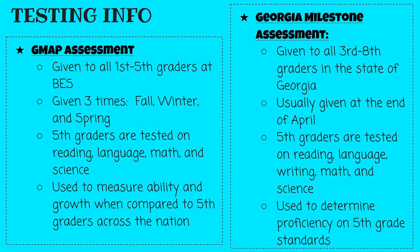Some important testing info for fifth grade: we give two major tests in fifth grade, the GMAP assessment and the Georgia Milestone assessment. The GMAP assessment is given to all first through fifth graders at Blackshear Elementary. It is given three times — once in the fall, then again in the winter, and then at the end of the year in the spring. Fifth graders are tested on reading, language, math, and science. We use this test to measure ability and growth when compared to fifth graders across the nation. At the end of the year, we give the Georgia Milestone assessment, given to all third through eighth graders in the state of Georgia. It is usually given at the end of April. Fifth graders are tested on reading, language, writing, math, and science. We use the results from this test to determine proficiency on fifth grade standards.